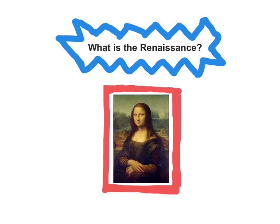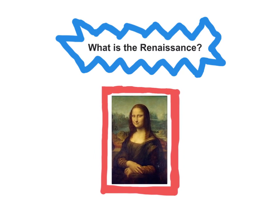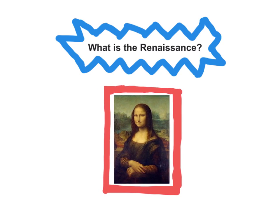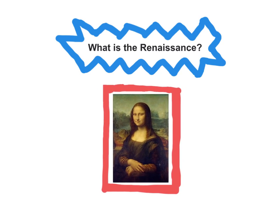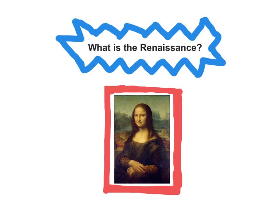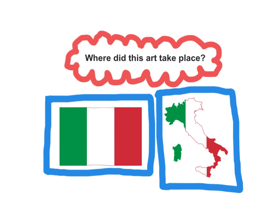One of the greatest paintings of the Renaissance was Leonardo da Vinci's Mona Lisa. The Renaissance was an original style in Italy, and it was also popular in southern France, Spain, and northern Europe, but it was mainly centered in Italy.